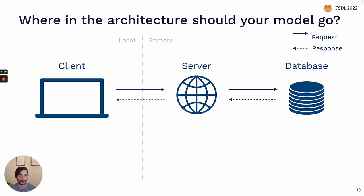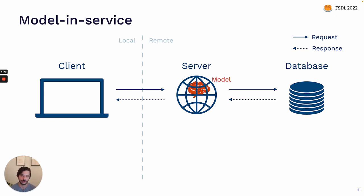This is a good segue to talk at a high level about different ways you can structure your machine learning powered application — in particular, where the model fits into it. There's a few different components: on the left we have a client, essentially your user, the device they're using to interact with your application. That device makes calls over a network to a server where most of your code runs, and that server talks to a database. The prototype approach mostly fits into the model-in-service approach where the web server just has a packaged version of the model sitting inside of it.